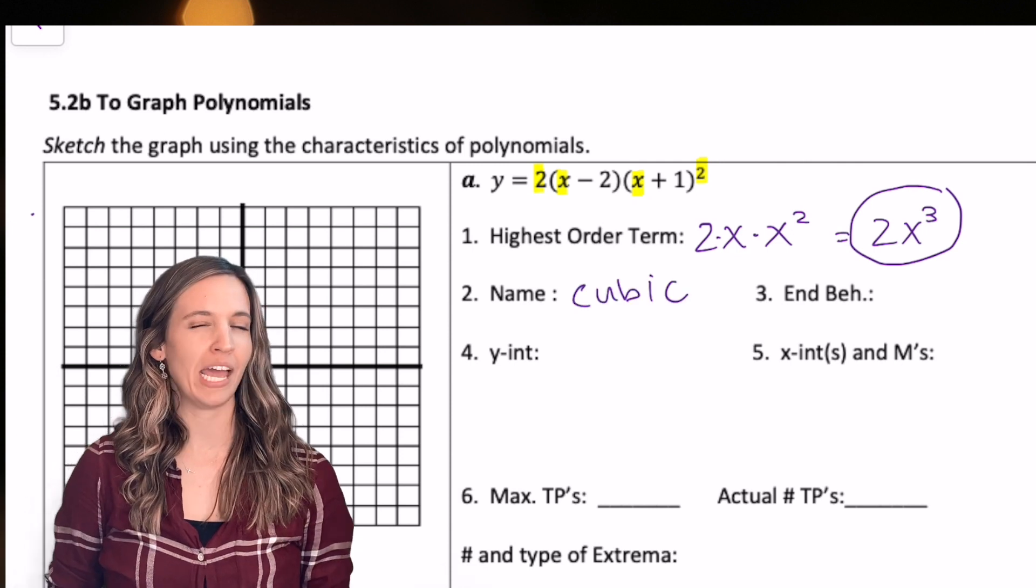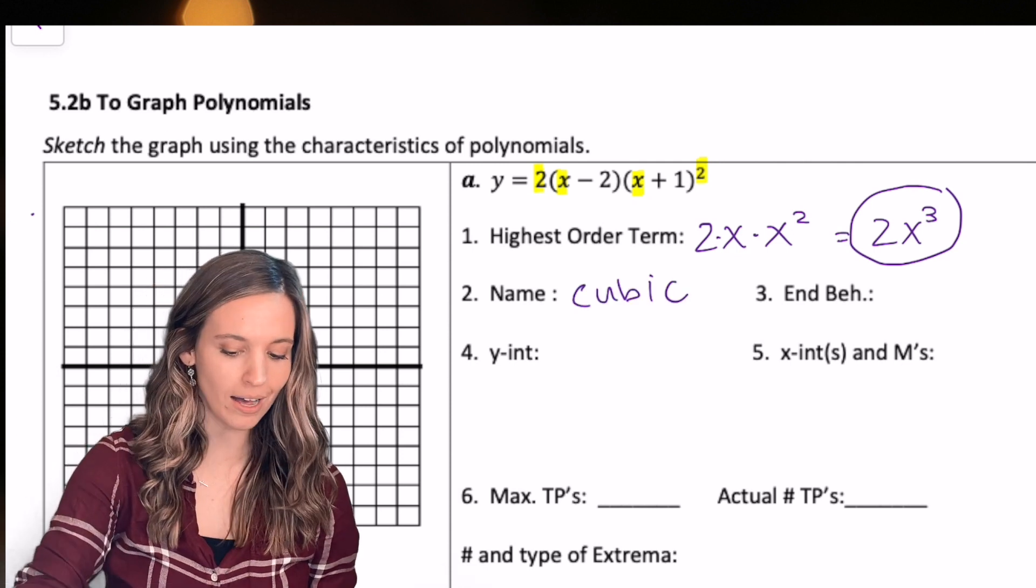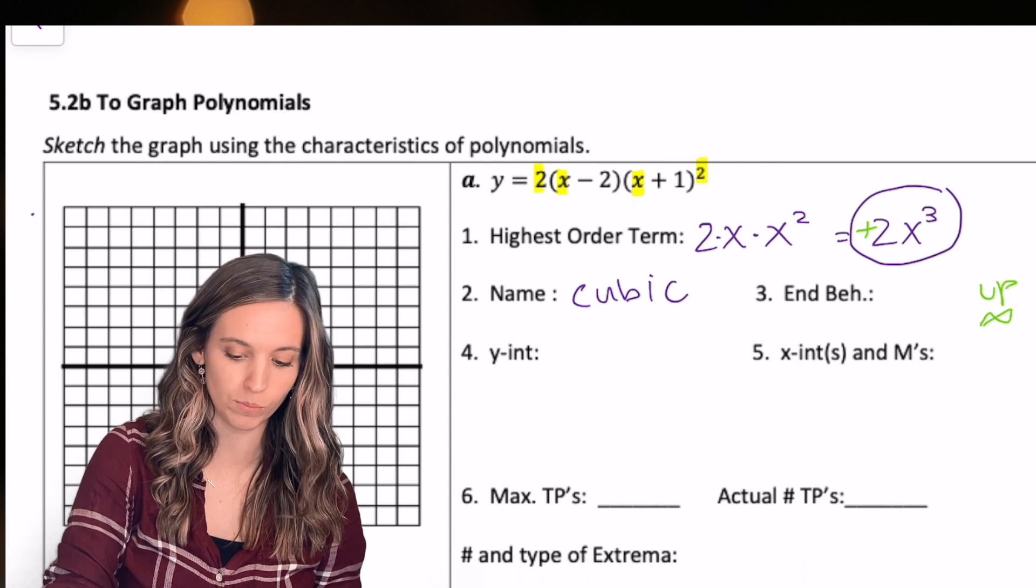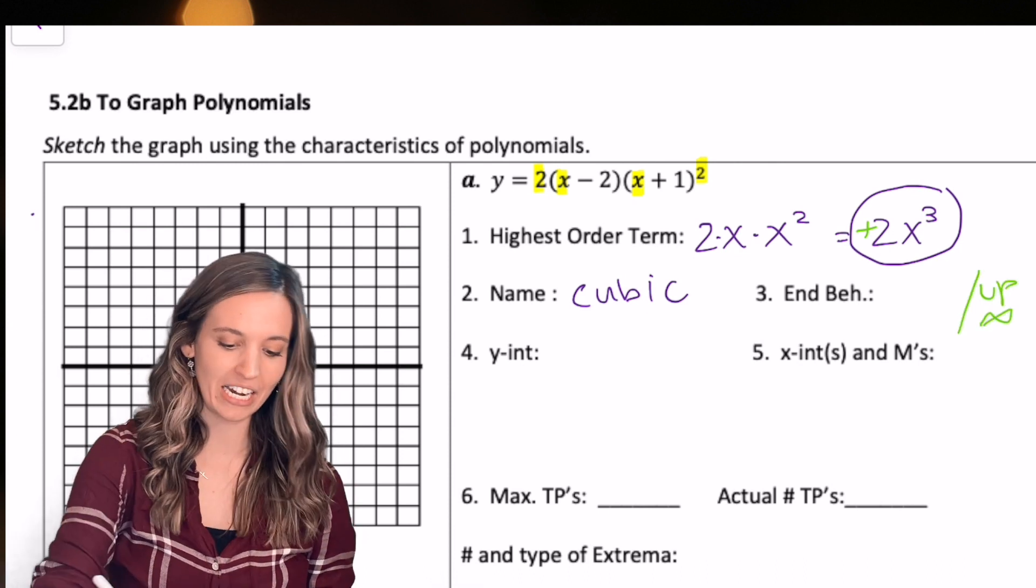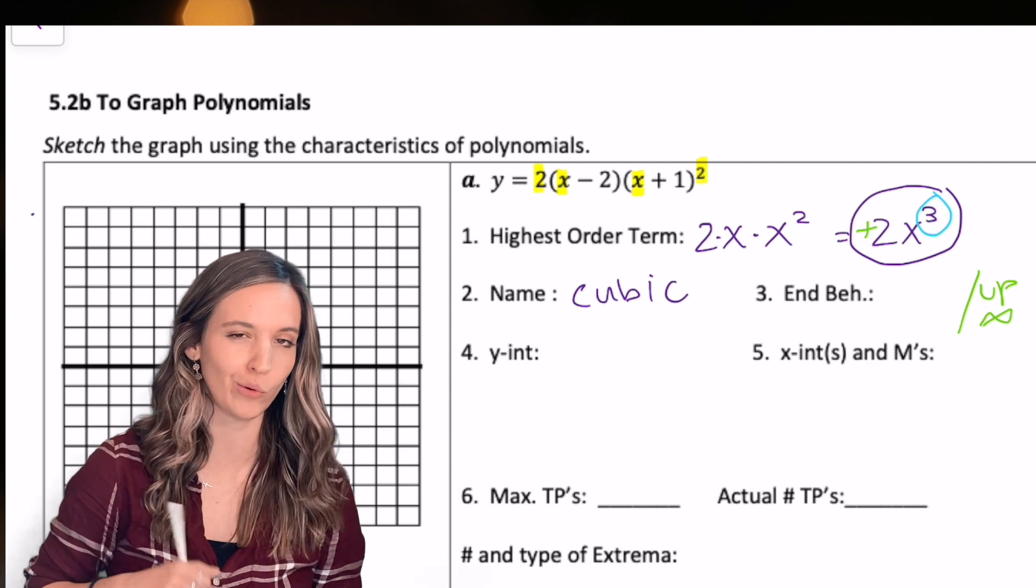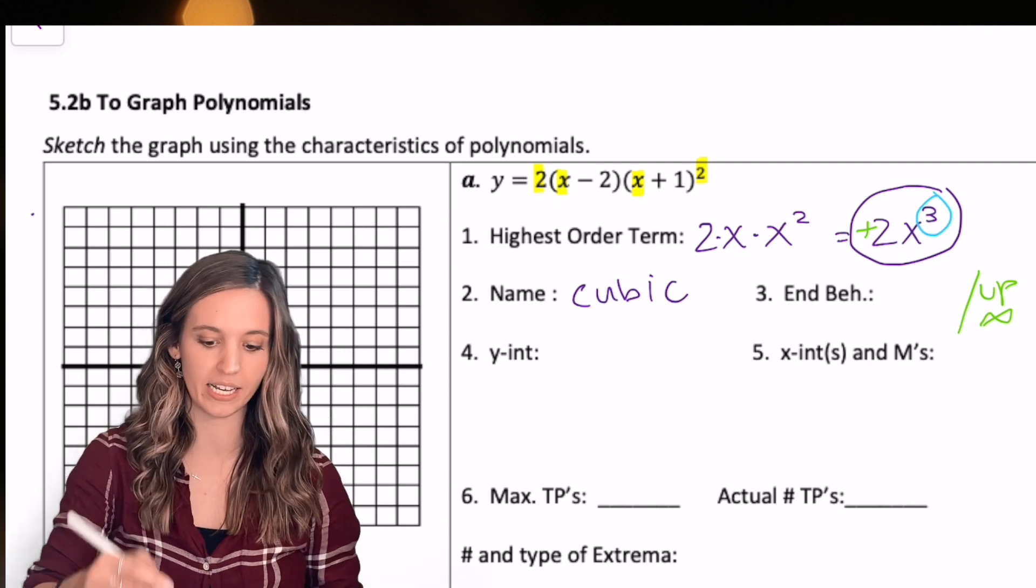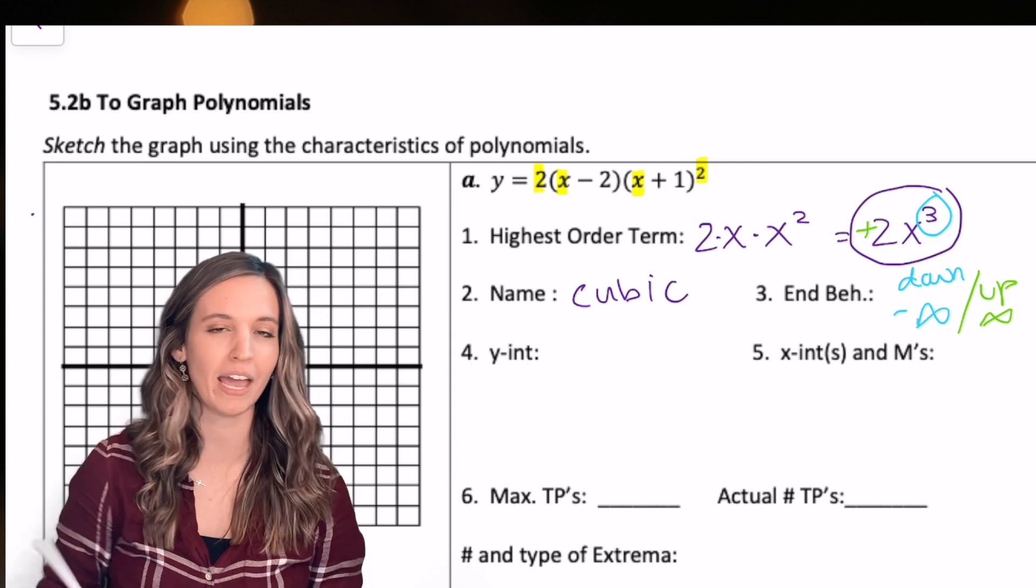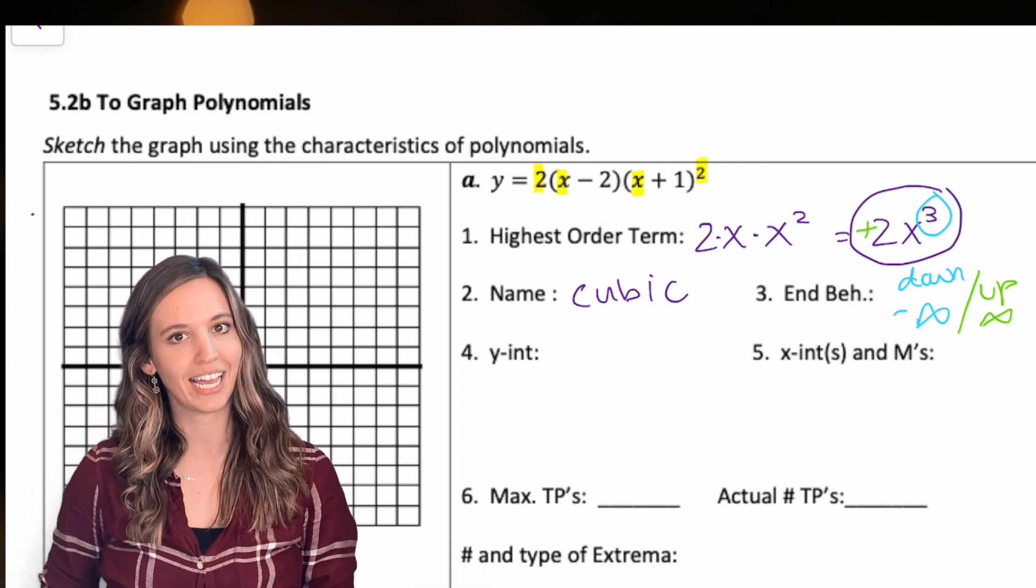Let's find the end behavior. I've got a positive leading coefficient, so I know I'm going to end positive up towards positive infinity, and I have an odd degree, so odd opposite, so I'm going to start down negative infinity. So my end behavior is down, up, negative infinity, infinity.